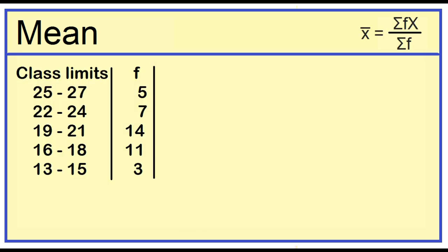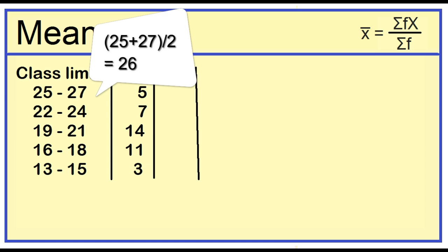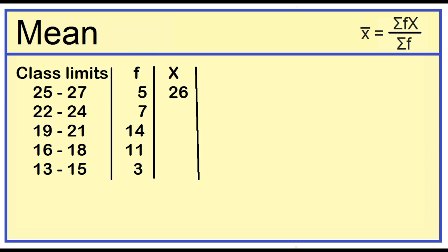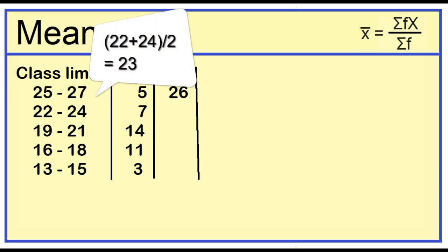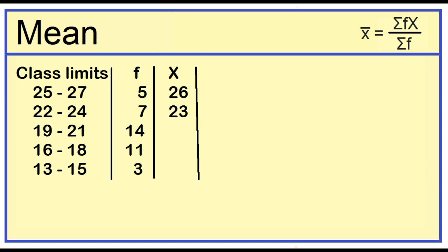Let's add a column for the class marks. To find the class mark, add the lower limit and the upper limit, then divide the result by 2. For example, 25 plus 27 is 52 divided by 2 is 26. 22 plus 24 is 46 divided by 2 is 23. Next class marks are 20, 17, and 14.